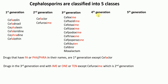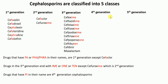Coming to the fourth generation cephalosporin — drugs which have PI in their names belong to the fourth generation. The drugs are Cefepime and Cefpirome. Cefepime has PI in its name, and Cefpirome has PI in its name. That's why they are fourth generation cephalosporins.